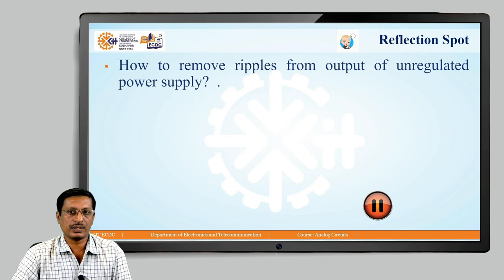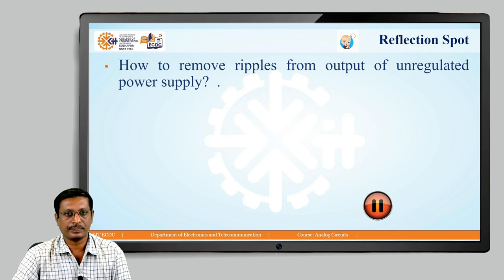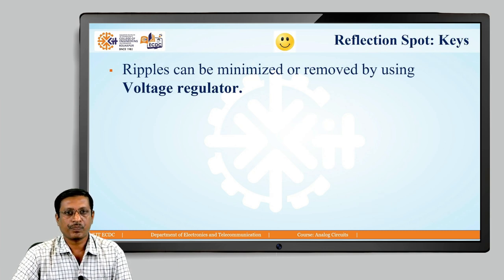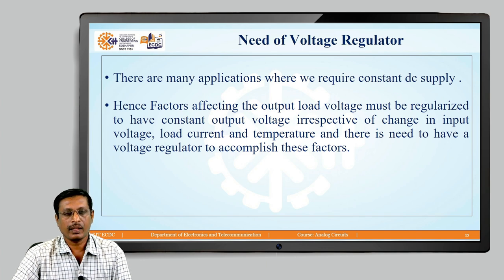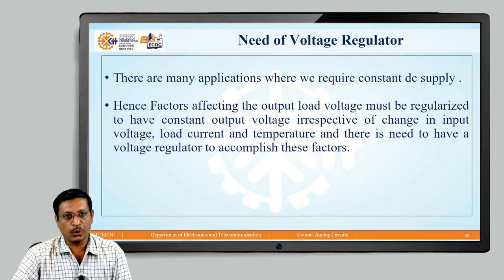Here is the reflection spot: How to remove a ripple from the output of an unregulated power supply? Pause the video and try to give the answer. Ripples can be minimized or removed by the use of a voltage regulator circuit. From the output of an unregulated power supply, it is observed that even after using a rectifier and filter circuit, it is not possible to completely remove the AC contents — that is, ripple.